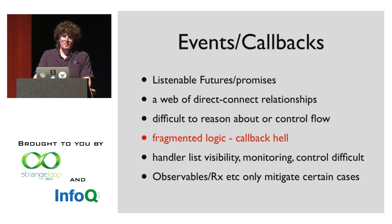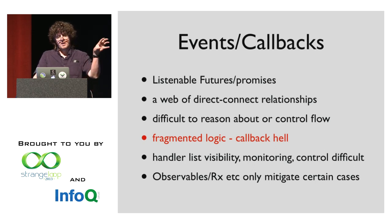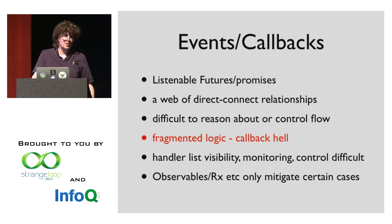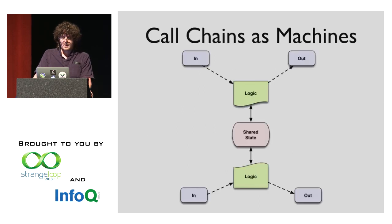Everybody understands the phrase 'callback hell.' There have been various approaches to try to mitigate some of this with observables and Rx and things like that, but they only handle a very narrow set of cases — mostly filtering or making a stream-like kind of approach to composable transformations on a single event chain. But if you're really trying to make a state machine that has multiple sources and sinks of events, you can't just get it out of filter and map composition primitives.